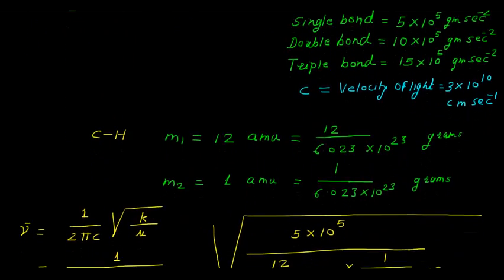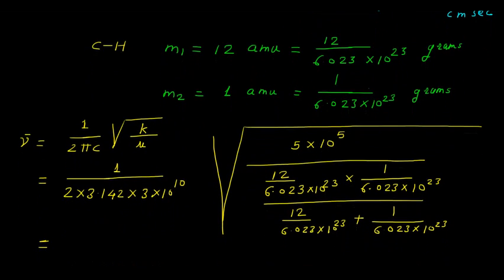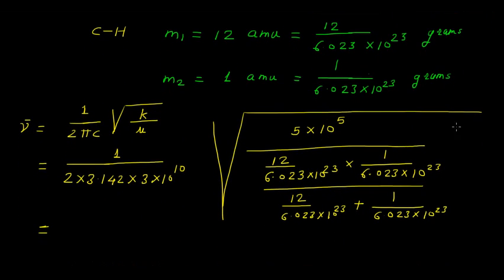Now here m1 is carbon, so its value is 12 atomic mass units, and we can convert it into grams by dividing 6.023×10^23. For m2 it will become one atomic mass unit because it is hydrogen, so this is 1 divided by 6.023×10^23 grams.